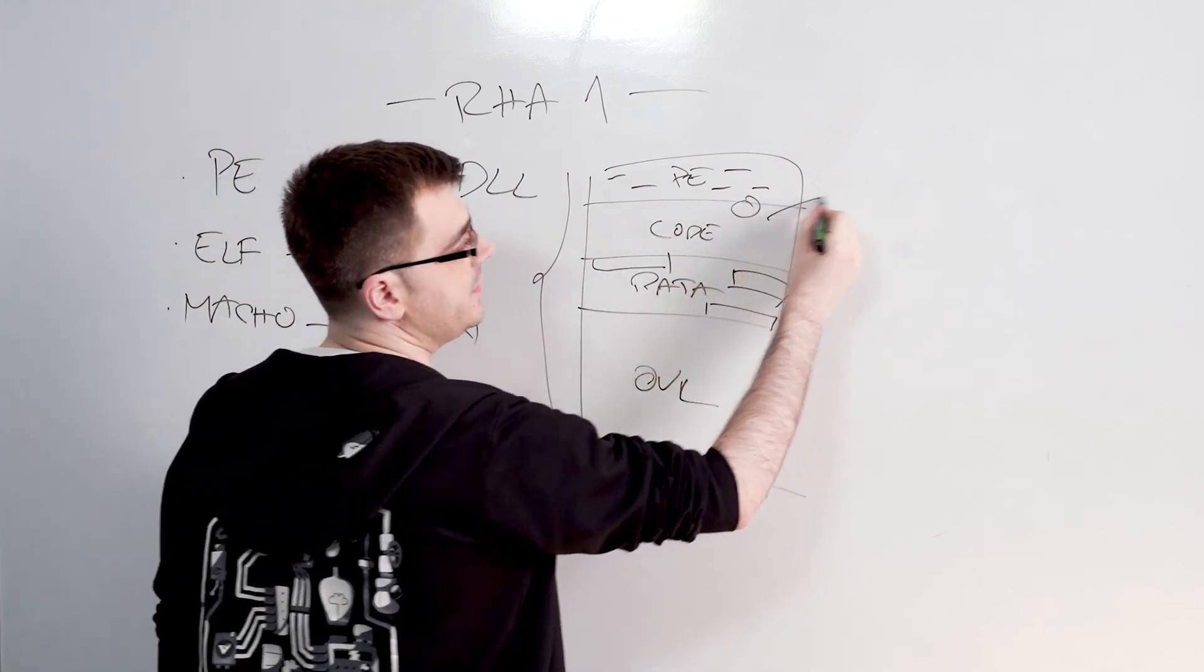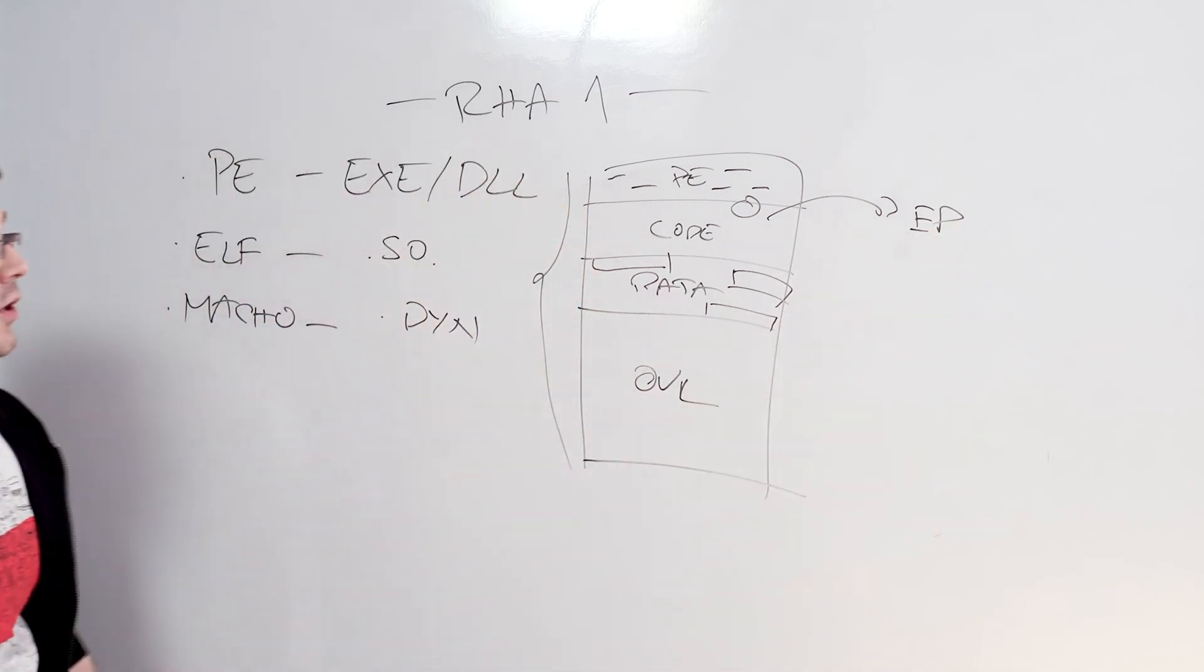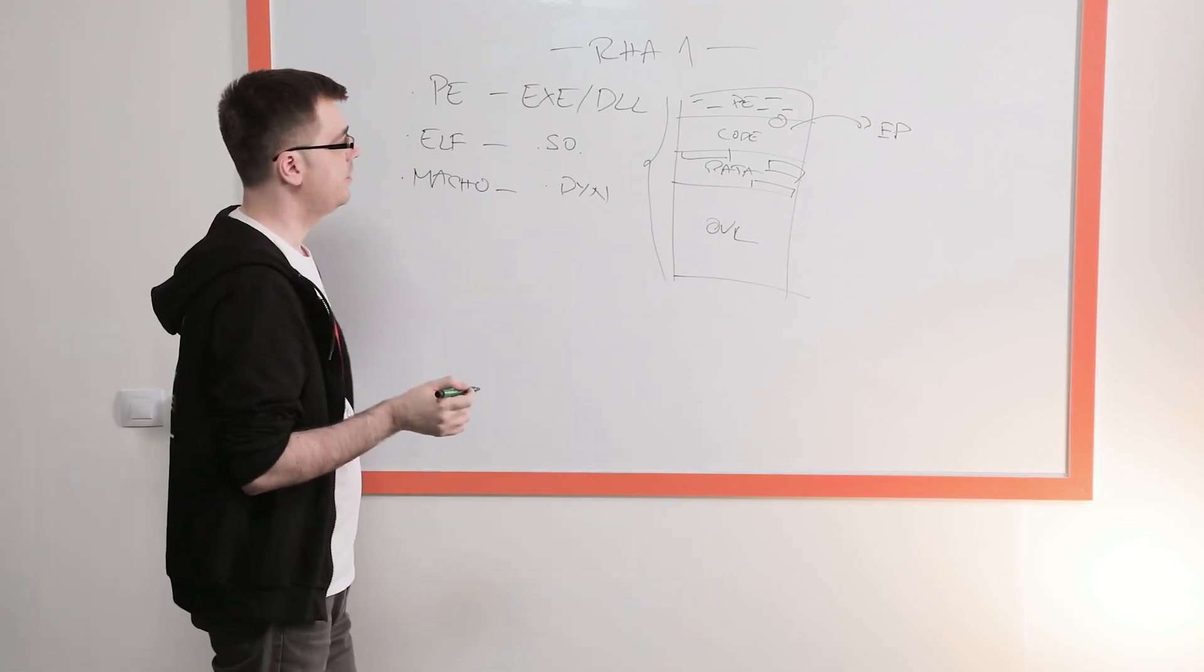So if there's a function here, which is the entry point function, we'll take some of its code, we'll hash it together to create the ultimate RHA hash for the binary.